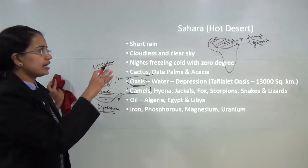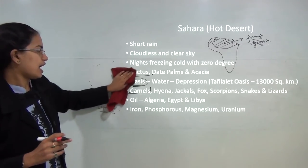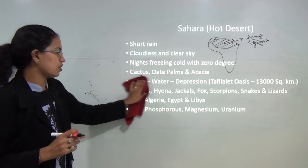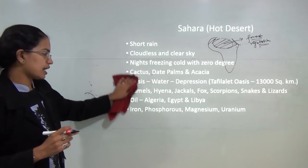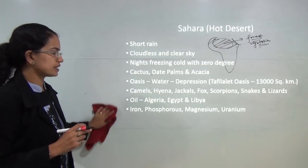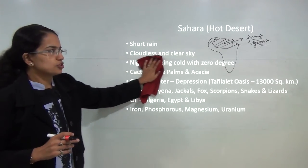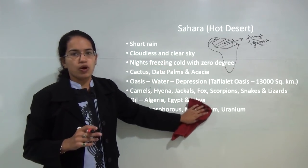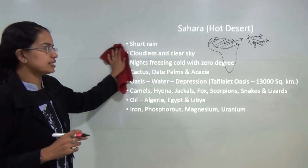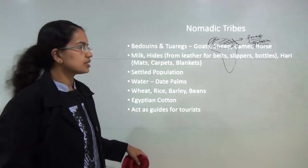The Sahara desert is rich in minerals and resources. Among the mineral resources, the common ones are iron, potassium, phosphorus, magnesium and uranium. It is also a rich oil-producing area, with Algeria, Egypt and Libya as the major oil producers in the region.